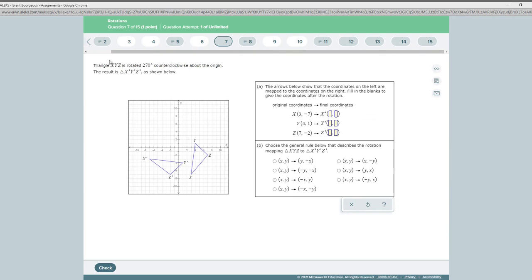So on this one it says you rotate at 270 degrees counterclockwise about the origin, and they've done that. So they started here and rotated to 270 degrees, and it ended up right here. Now the question is, what are the new coordinates of this particular figure, and then what is the rule that applies here?